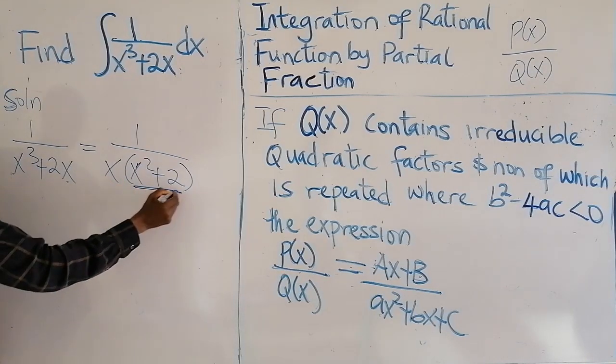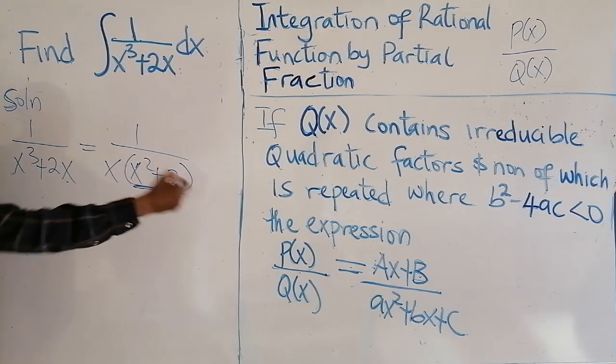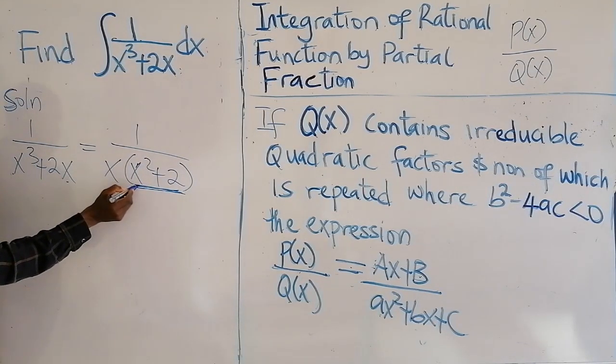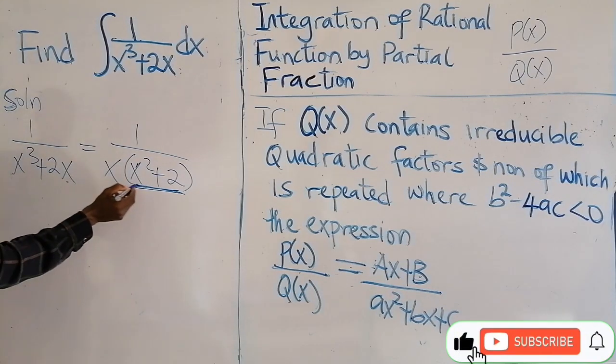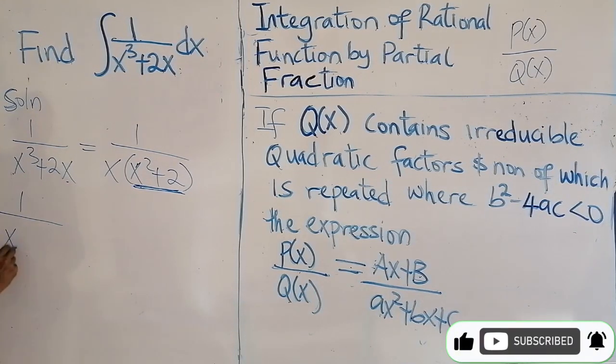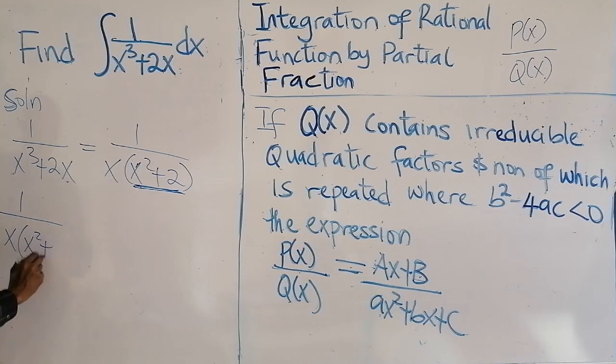we have X squared plus 1 plus 2. If you check this quadratic expression now, it is irreducible. You can't factorize this. So in that case now, I'm going to write this one as a fraction, 1 over